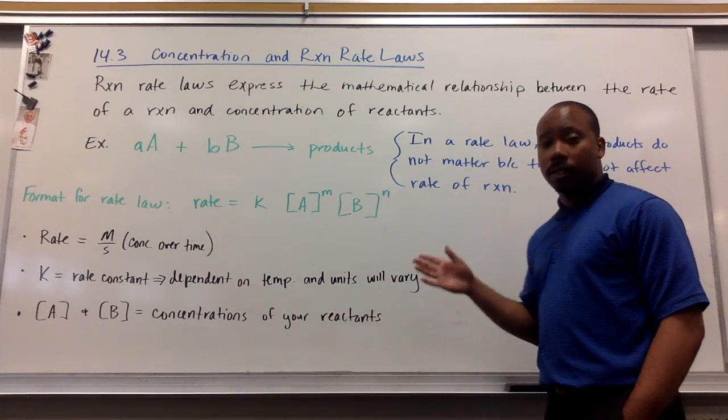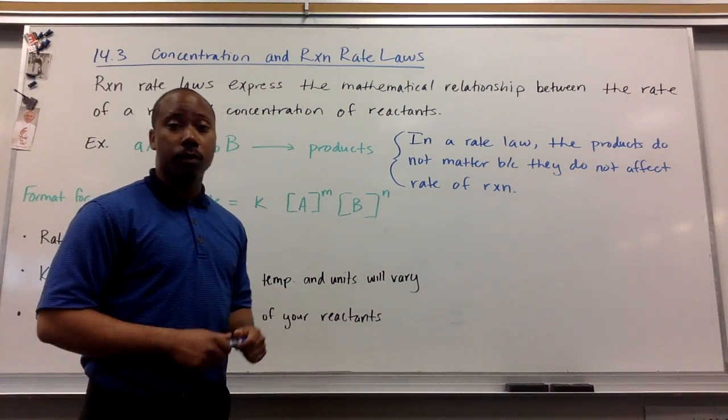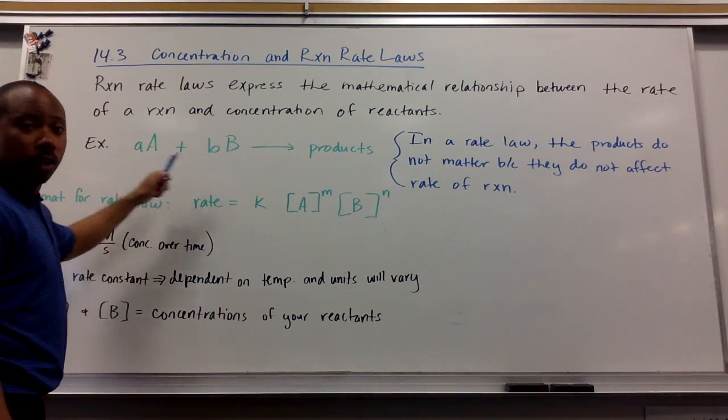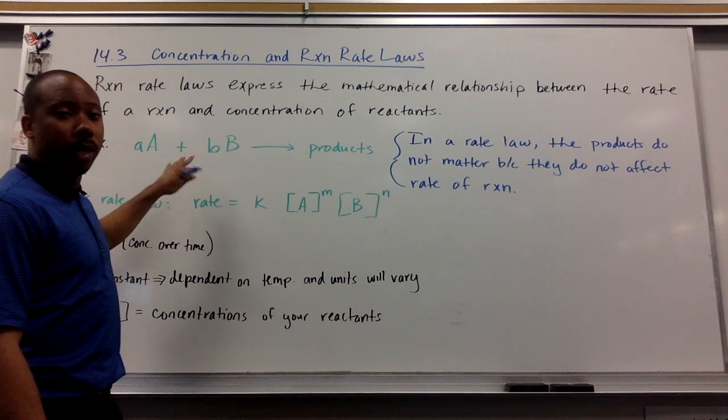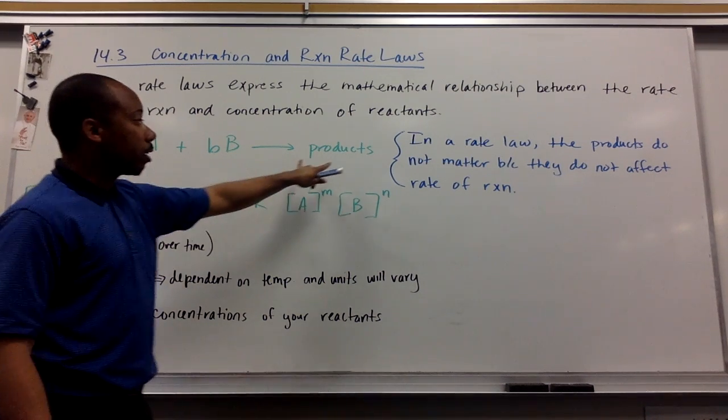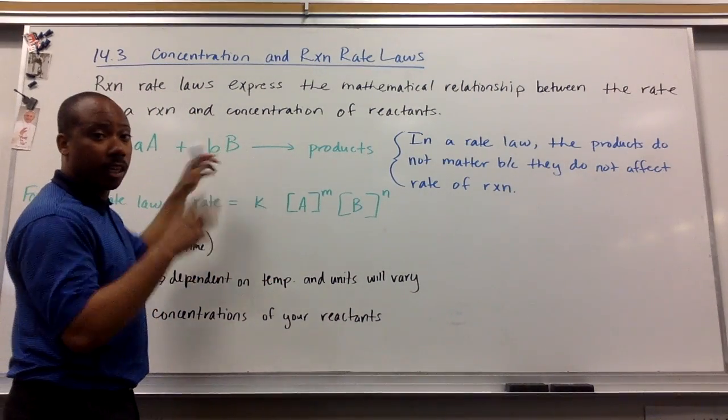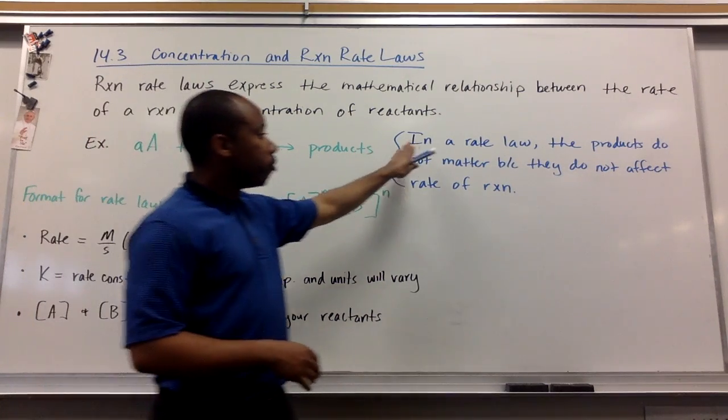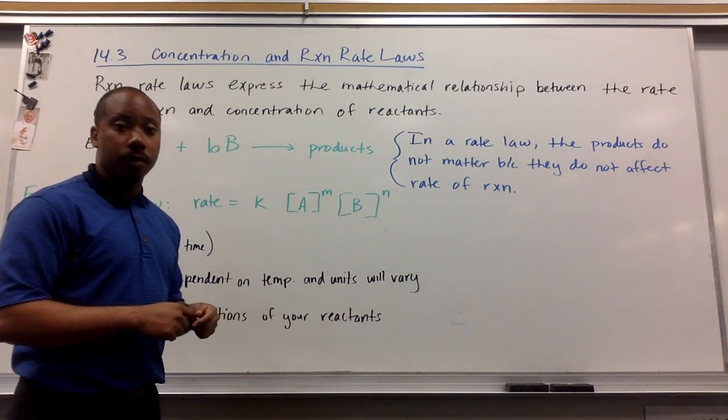Reaction rate laws express the mathematical relationship between the rate of a reaction and the concentration of reactants. So if I take a generic example like reactant A reacts with reactant B to form my products, let's analyze how we can create a rate law out of this generic reaction. The products in this case don't matter because the rate of my reaction only depends on my reactants colliding. It does not depend on what's going to be formed after the fact. So in the rate law, the products do not matter because they do not affect the rate of the reaction.